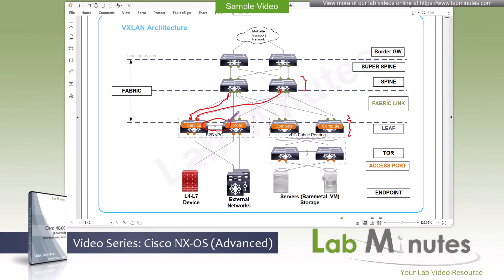There is also another mode of VPC called VPC Fabric Peering, which uses fabric uplinks for the peer link and peer keepalive, eliminating the need for a physical back-to-back cable. These two switches here are an example of VPC Fabric Peering — there are no direct connections between them. Instead, the peering and keepalive leverage a tunnel built through the fabric, and we will have a lab for that.